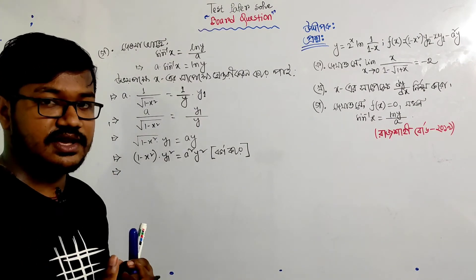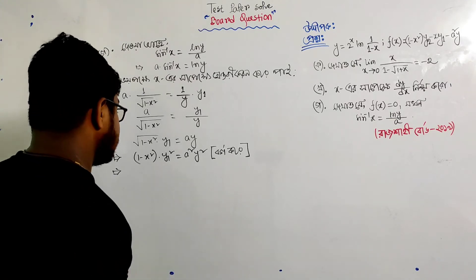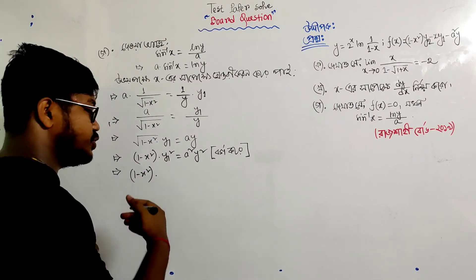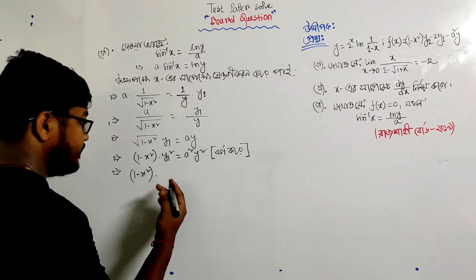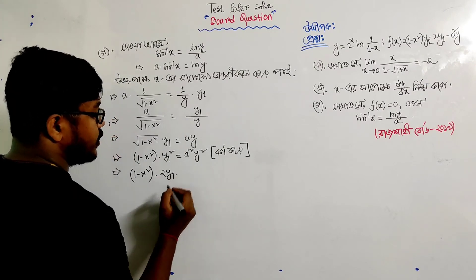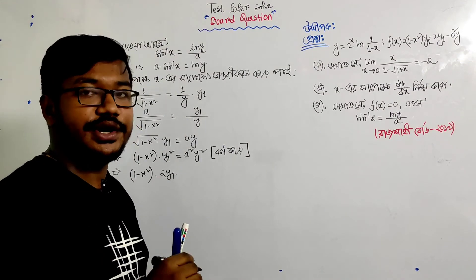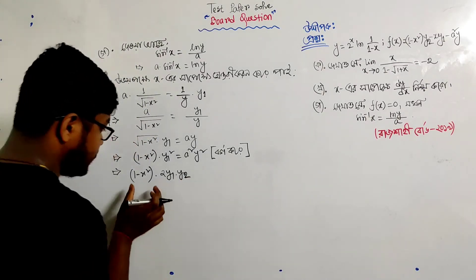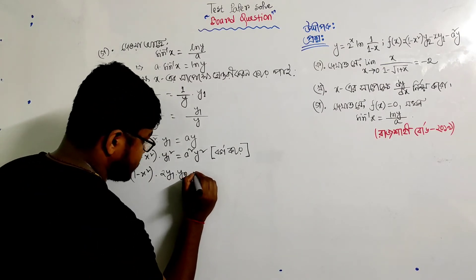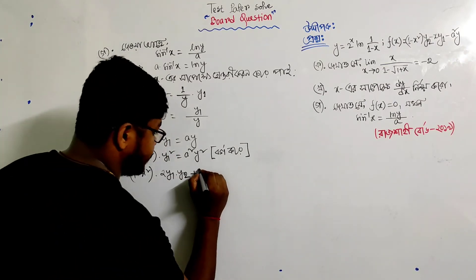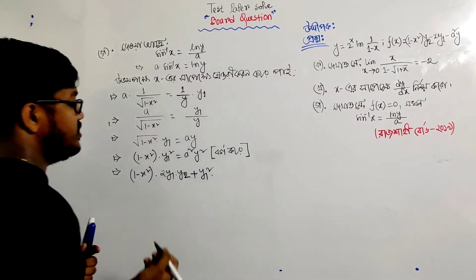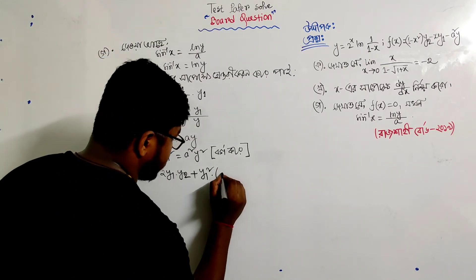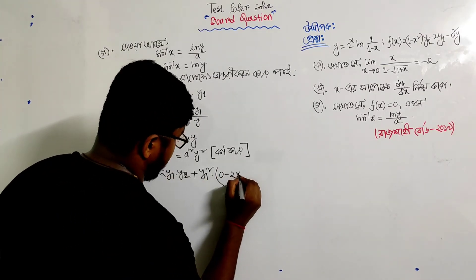So the first function times the differential of the second function, plus the second function times the differential of the first function. Here 1 minus x squared is constant and y is the second function. So we get 2y minus 2x, and applying the product rule: y₁ squared times the first function differential, and the differential of 1 minus x squared is 0 minus 2x.